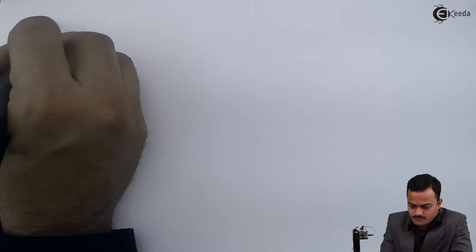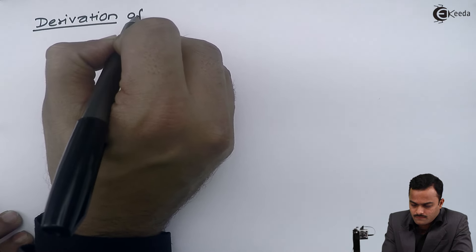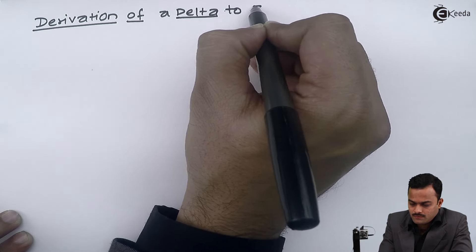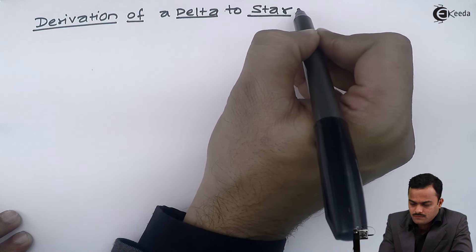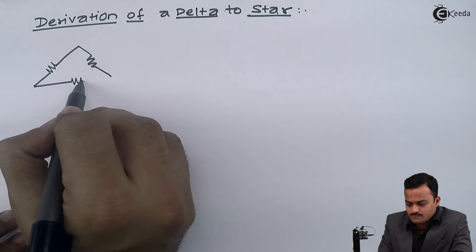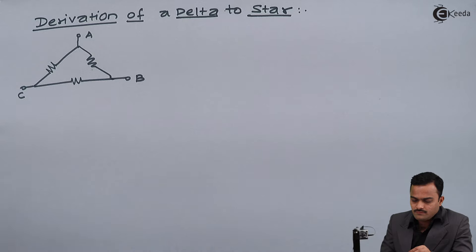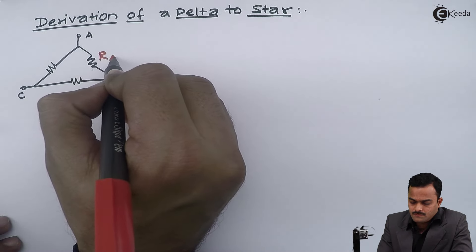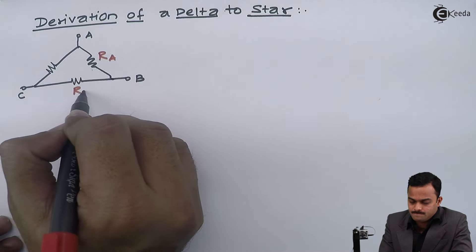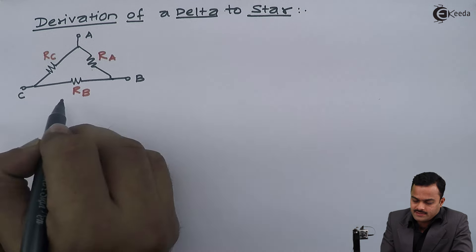The heading is: derivation of delta to star. When a delta circuit is given, points A, B, C are given. I will consider this value of resistance is R_A, this has R_B, and this has R_C. So it is a delta connection.